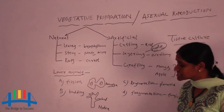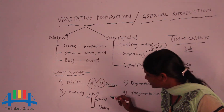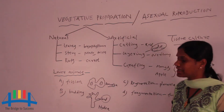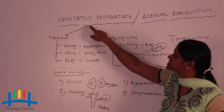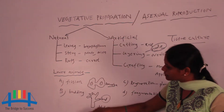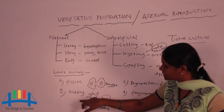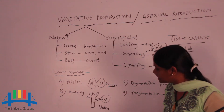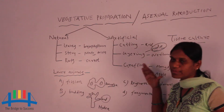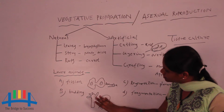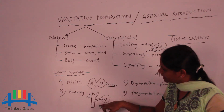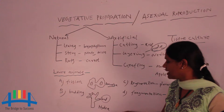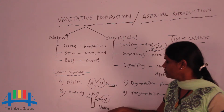The second method in lower animals is budding. A small bud appears on the body of hydra. In hydra, vegetative propagation occurs through budding — this small bud grows into a matured hydra, called a daughter hydra.